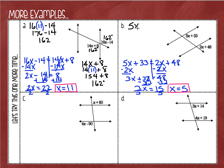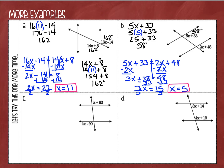Obviously these are not 5 degrees. So I'll use 5x plus 33 and replace x with 5. 5 times 5 is 25, and 25 plus 33 is 58. So this angle is 58 degrees. If I did my work right, the other will also be 58 degrees. Mentally: 2 times 5 is 10, and 10 plus 48 is 58. Works out perfectly.